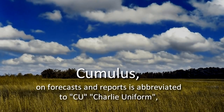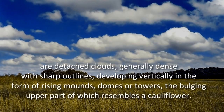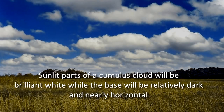Cumulus, abbreviated to CU, Charlie Uniform on forecasts and reports, are detached clouds, generally dense with sharp outlines, developing vertically in the form of rising mounds, domes or towers, the bulging upper part of which resembles a cauliflower. Sunlit parts of a cumulus cloud will be brilliant white while the base will be relatively dark and nearly horizontal.